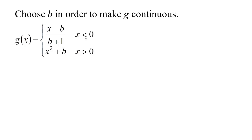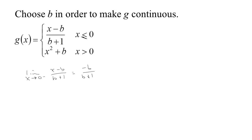I need to define the function at 0 first, so let me fix that by putting a 'less than or equal to' in there. So the value of the function at 0 is now determined. We want to make it continuous, so we need to make sure the limit exists at 0. Let's let x go to 0 from below, and we get negative b over b plus 1.